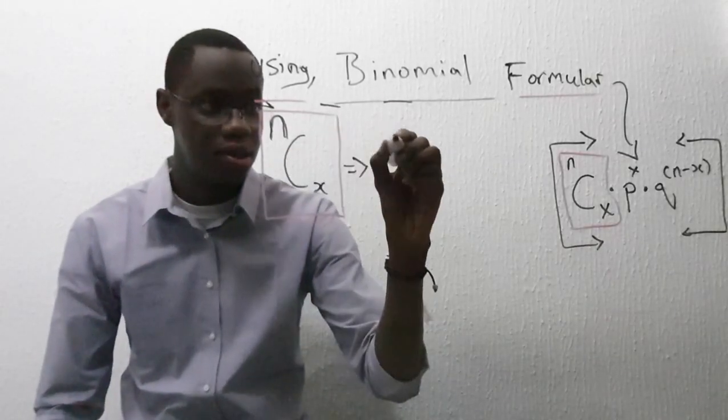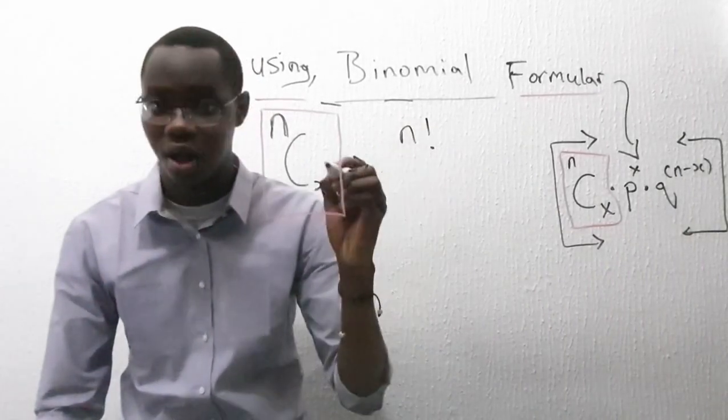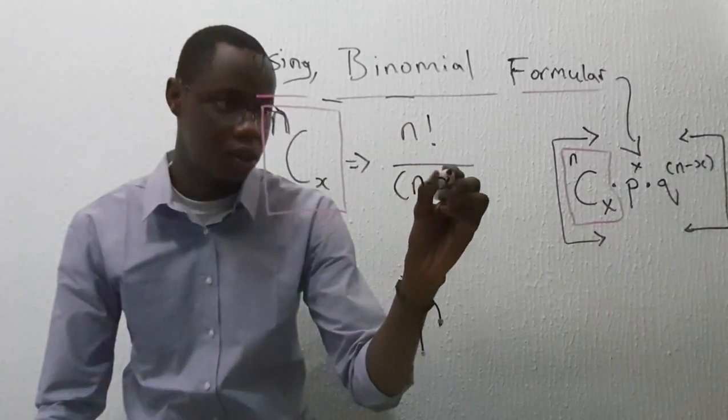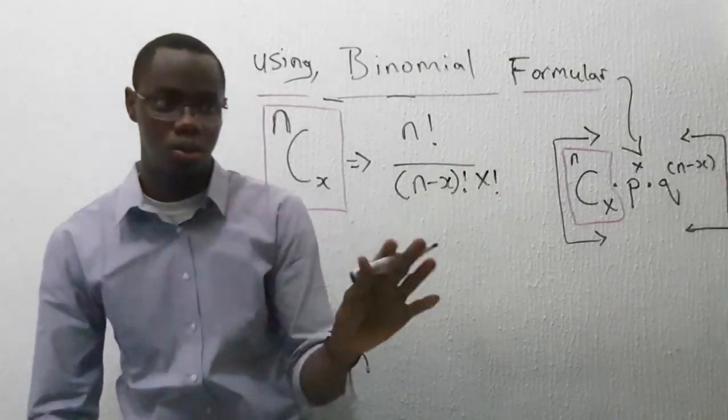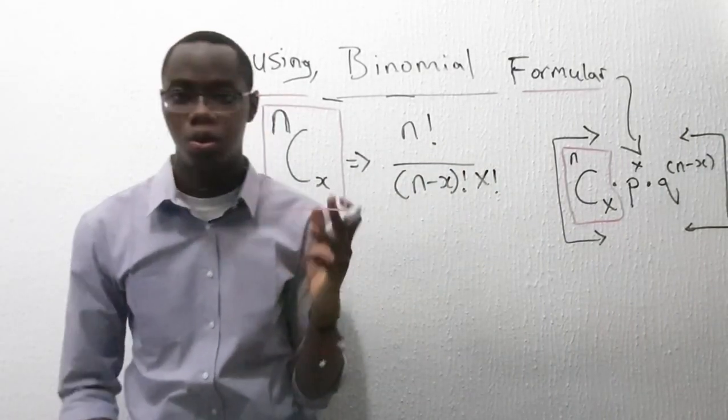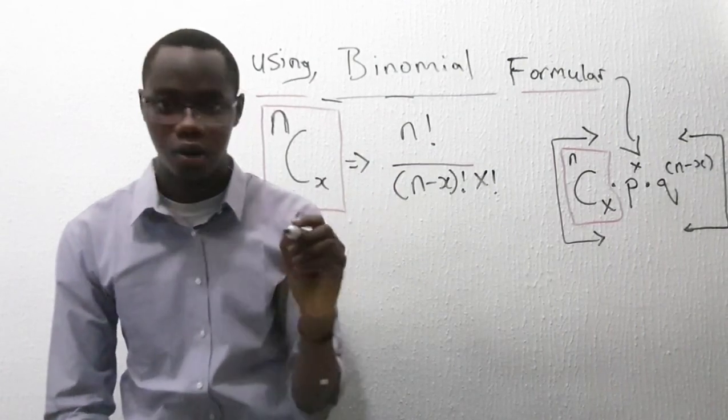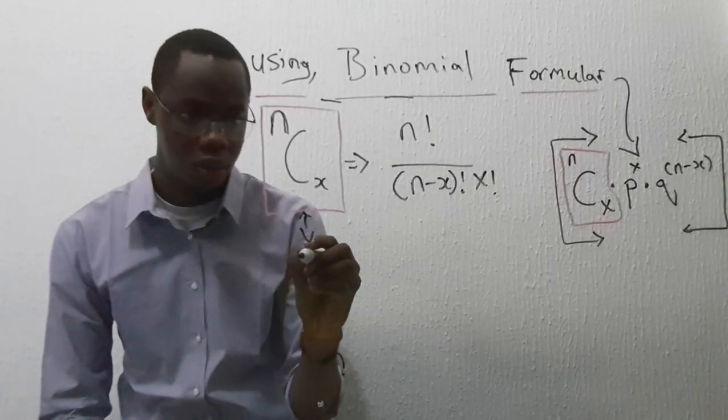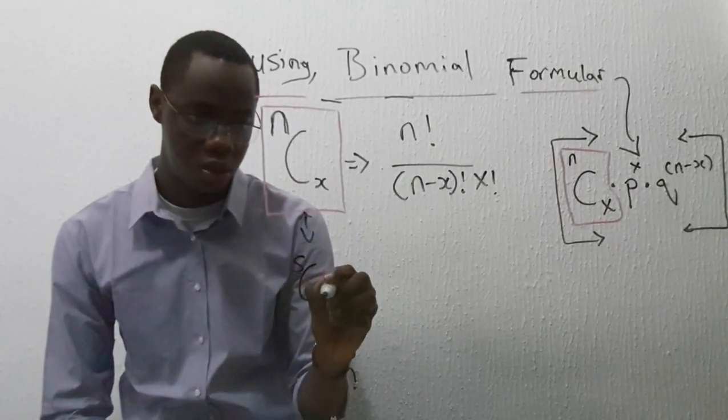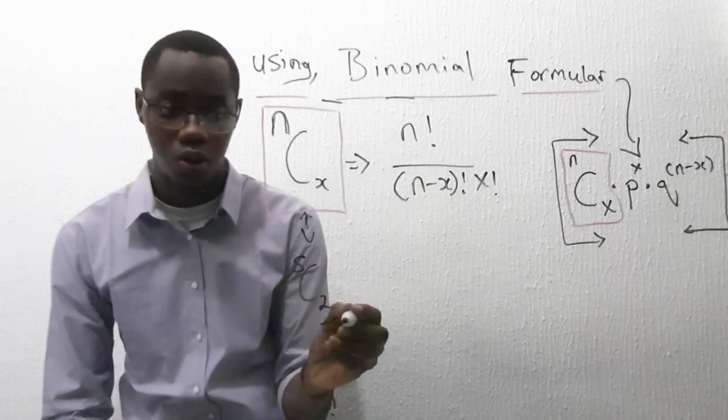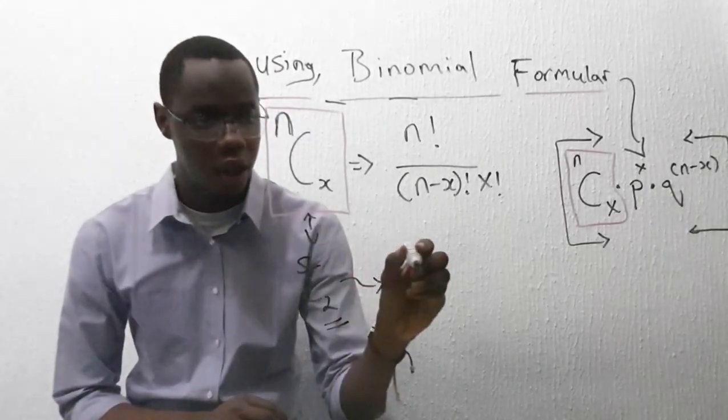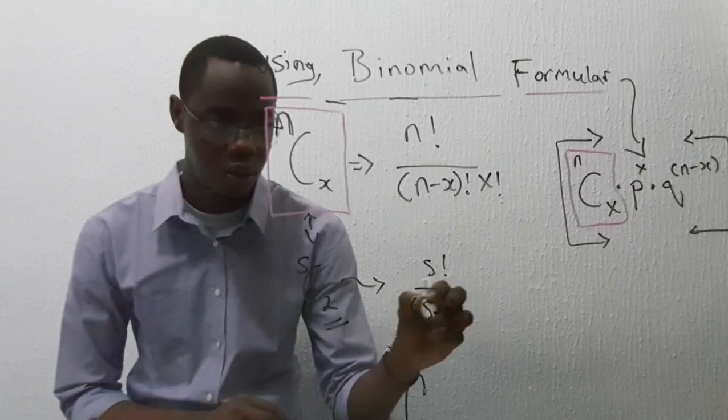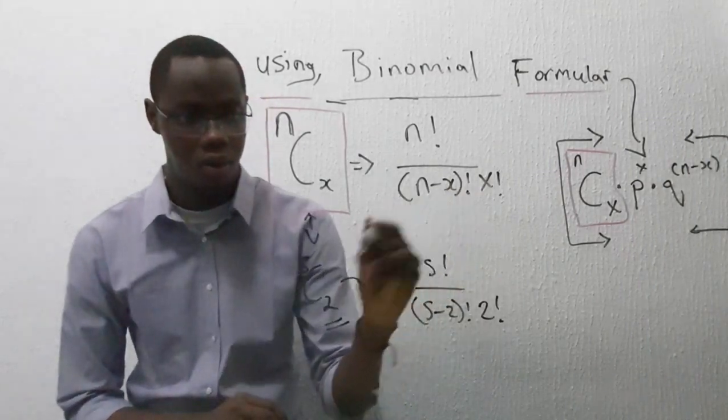Let's explain this part. Anytime you see this, it means it's the same thing as this expression here: N factorial over N minus X factorial times X factorial. Okay, well what is factorial? Factorial, I mean if I have for example 5 combination 2, I tried something 5 times, I'm interested in it only 2 times. So this is what I mean: 5 factorial over 5 minus 2 factorial, 2 factorial.